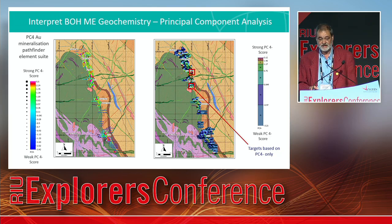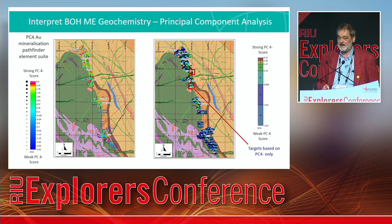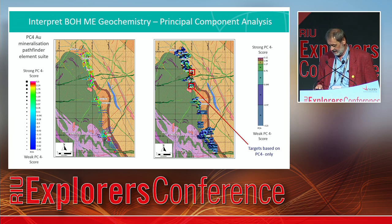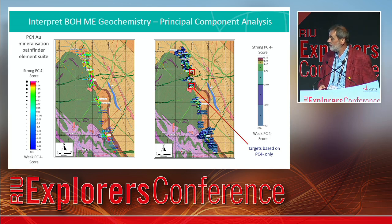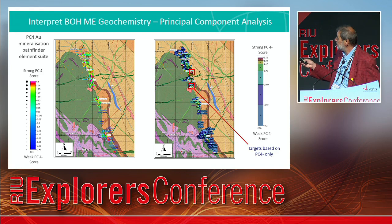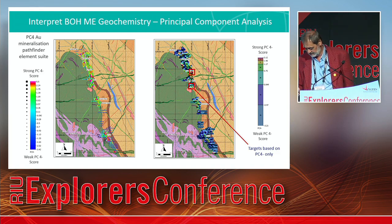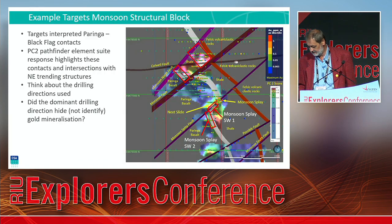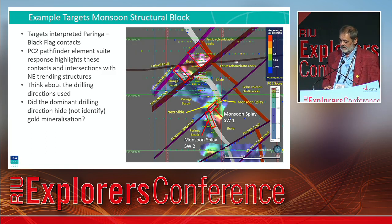We then interpreted the bottom-of-hole multi-element chemistry using principal component analysis, which investigates the correlation between all elements with respect to each other. Out of that emerged a particular principal component related to gold mineralization. We can plot that as a grid, and a number of interesting targets pop up for further investigation.